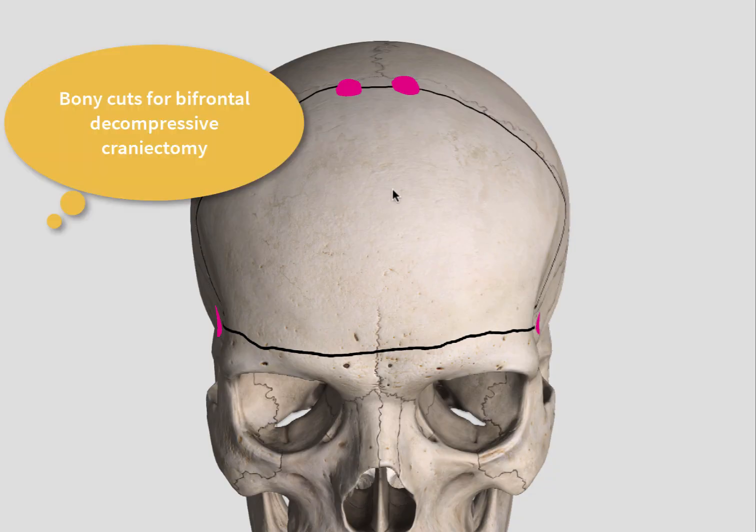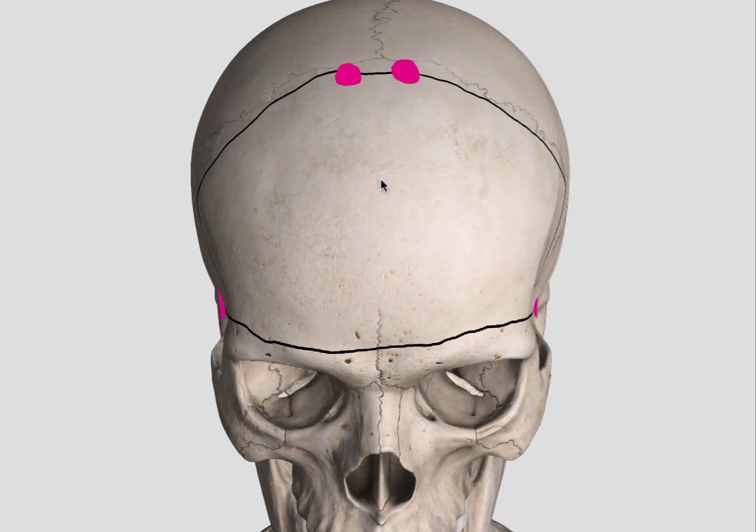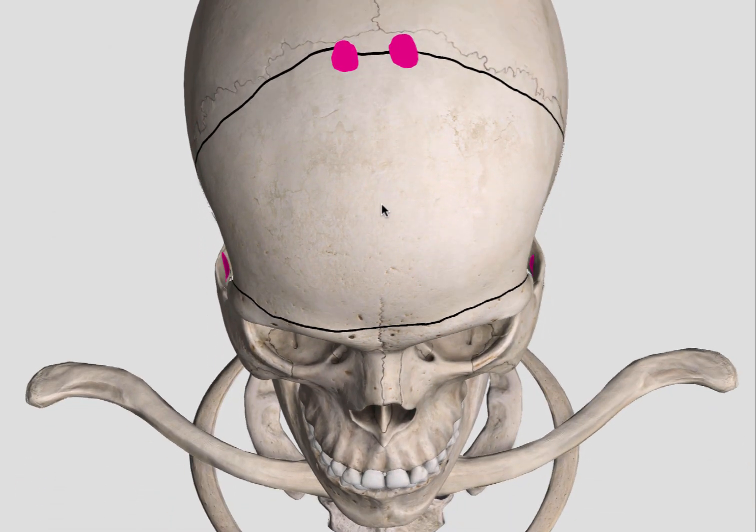Hello. This is how I would do bifrontal craniectomy. I would put paracentral burr holes just anterior to the coronal suture on either side of the midline.